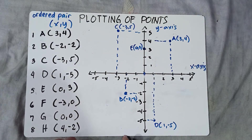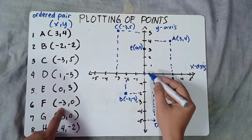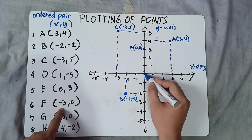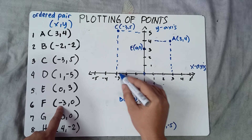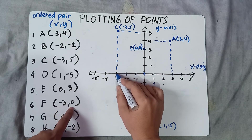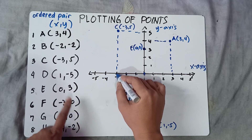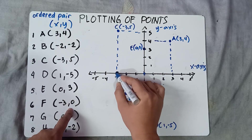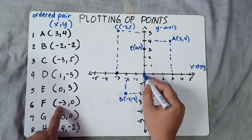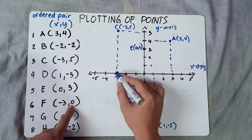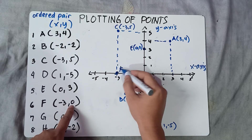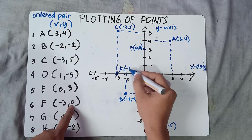Next is F: (-3, 0). Starting from the origin, you move 3 units to the left since this is negative — 1, 2, 3. For y, y is 0, so no movement for y; you will not move up or down. Move 3 units to the left, no movement for y. Label F equals (-3, 0).